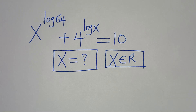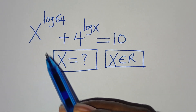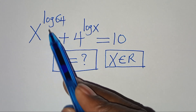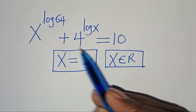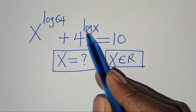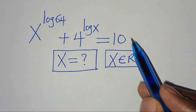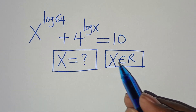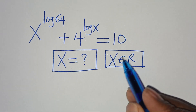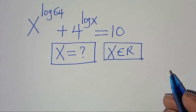Hello everyone, you are welcome to solve this nice logarithmic math problem, which is x to the power of log 64 plus 4 to the power of log x, this is equal to 10. So what is the value of x, given that x is an element of real numbers.